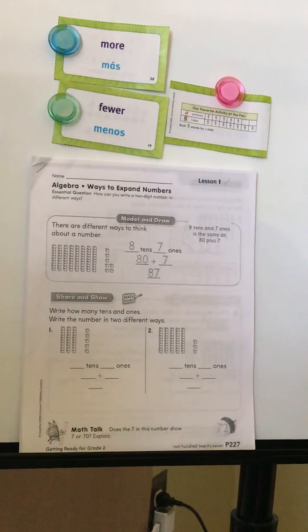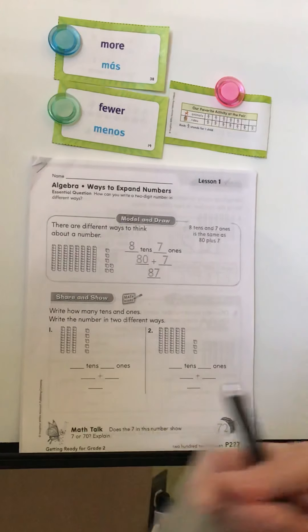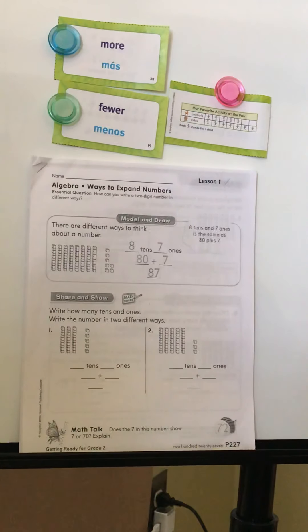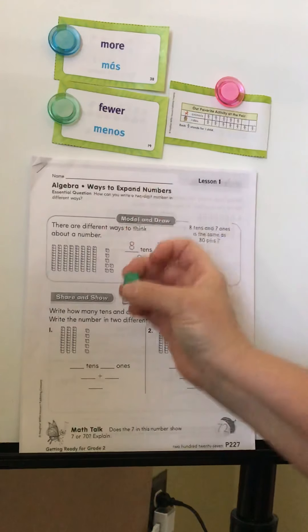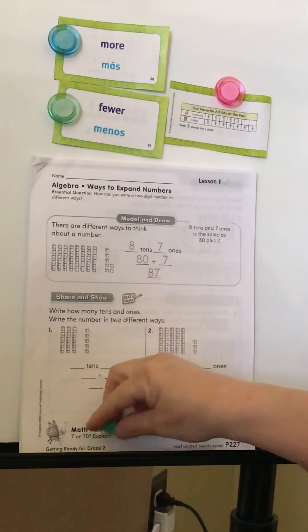Now we're moving on to your packet. Today is lesson one and we're going to look at place value. Remember, we've practiced this before so this is review. We have ones, tens, and hundreds. Numbers one through nine are ones, and we represent them with a little square or circle.